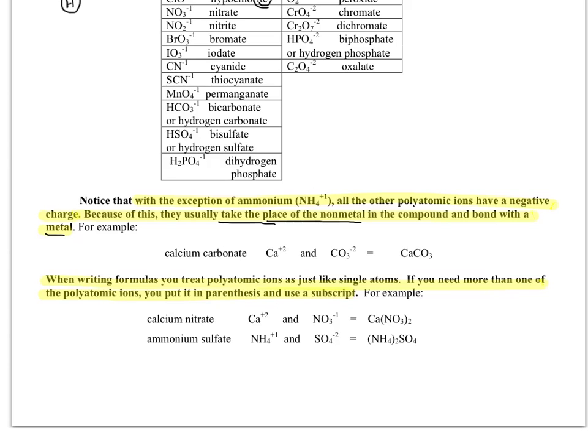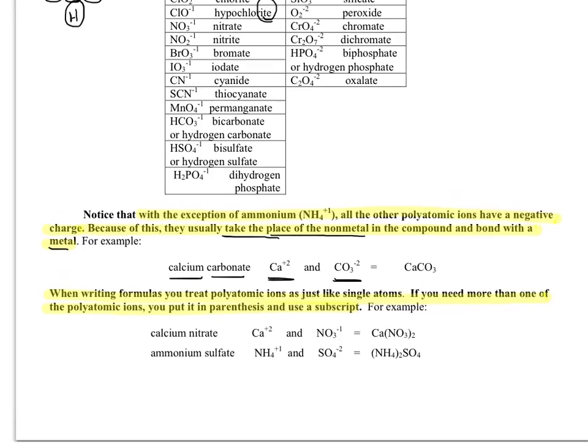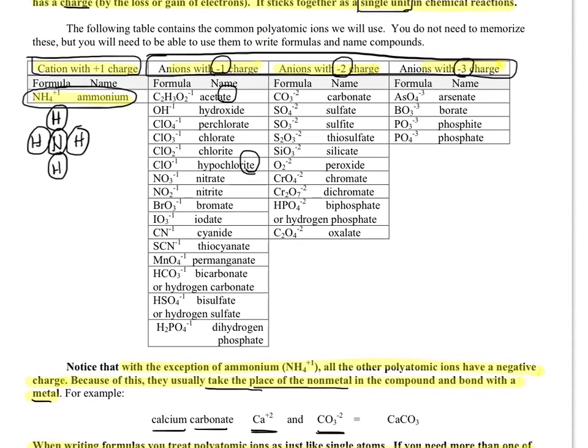So an example of a polyatomic compound is calcium carbonate. Calcium carbonate is made up of calcium that, if we look on the periodic table, is in the second family. So it has a plus two charge and it's made up of carbonate. Now, how are you supposed to know what carbonate is? Well, you'd go look in this chart and sure enough, you'd see carbonate here.